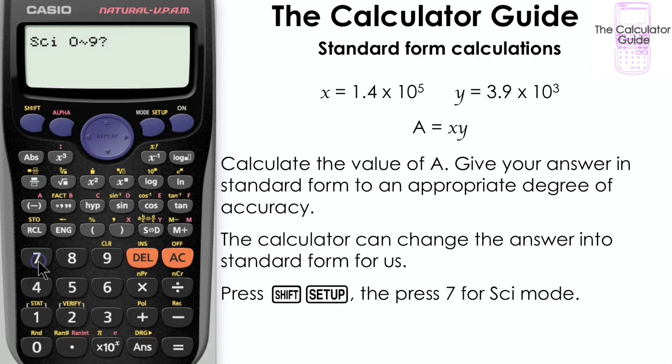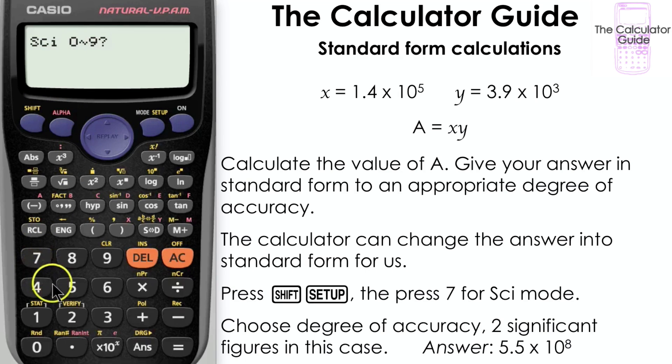Here's where we decide on our appropriate degree of accuracy. As our standard form numbers x and y were given to two significant figures, we'll choose the same for our answer. So press 2. And here we have our answer, 5.5 times 10 to the power of 8.